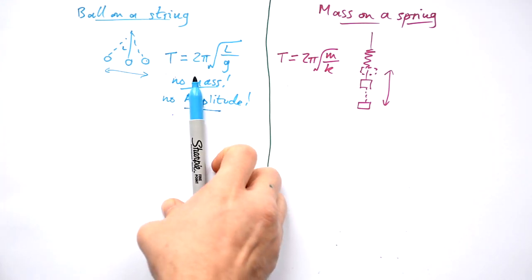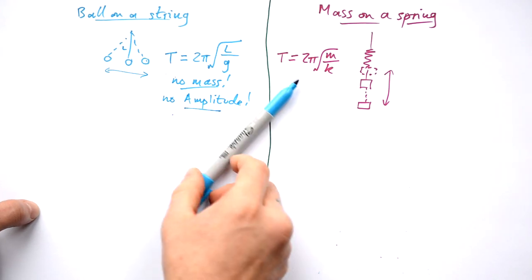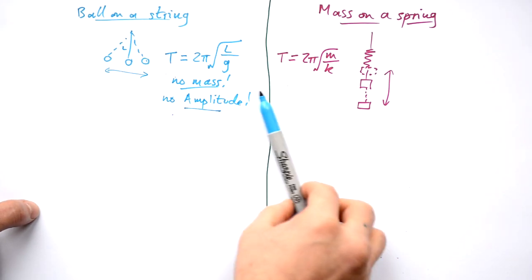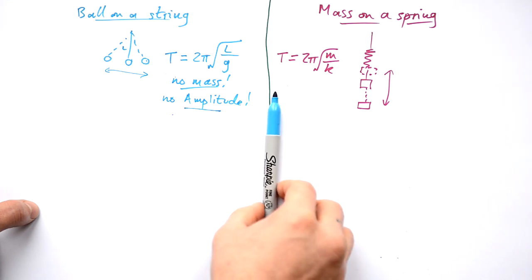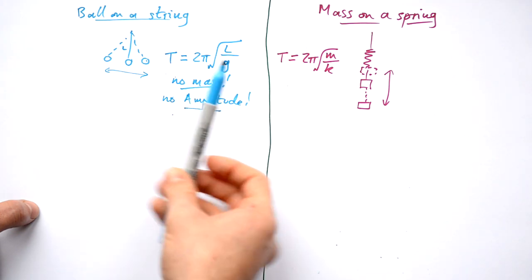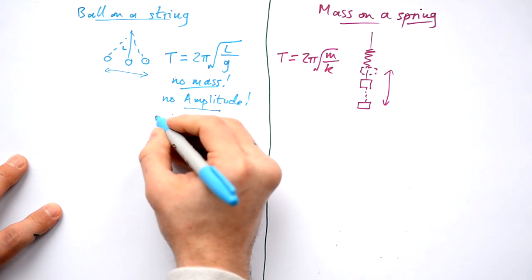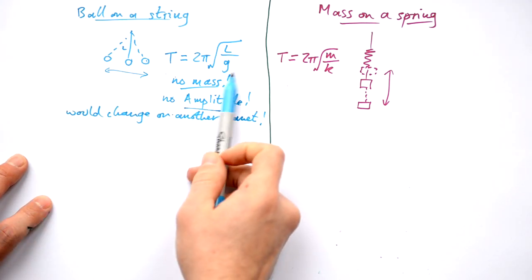That's why we have pendulums in some clocks, like grandfather clocks. They start off swinging a lot. Their amplitude is big. Over time, their amplitude gets less, but that doesn't actually affect the time it takes for that pendulum to swing. But it does have g in, so it would change on a different planet, because you have a different g.